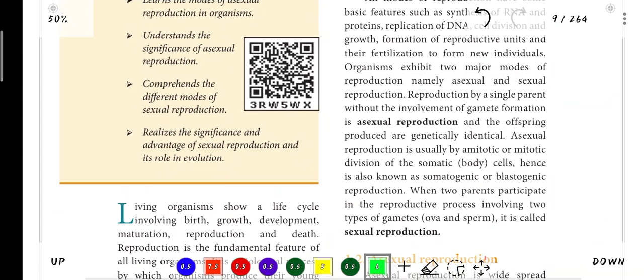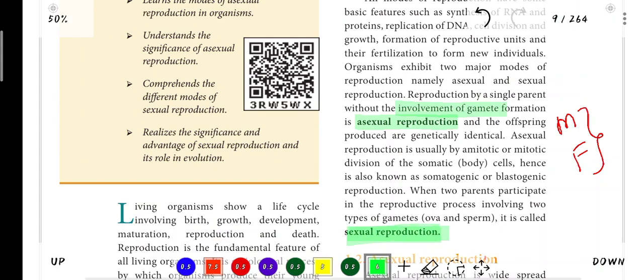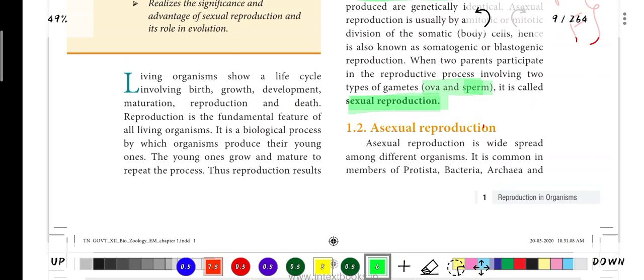First, Reproduction. What is meant by Asexual Reproduction? What is meant by Sexual Reproduction? Asexual Reproduction is reproduction by a single parent without involvement of gametes. Gametes means male or female. Two gametes involved in reproduction is known as Sexual Reproduction. Asexual means absence of gametes. Sexual Reproduction is by the fusion of gametes - male sperm and female ova.